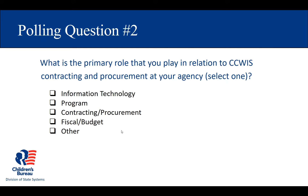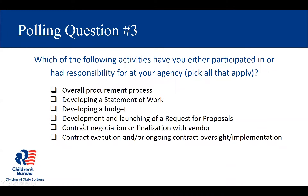Our third polling question asks which of the following activities you have either participated in or had responsibility for at your agency — please select all that apply. Options include: overall procurement process, developing a statement of work, developing a budget, developing and launching request for proposals, contract negotiation or finalization with the vendor, contract execution, and ongoing contract oversight or implementation.